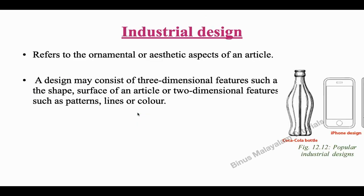The next one is industrial design. If you have a trademark, you can use a brand new design. Industrial design refers to the ornamental or aesthetic aspect of an article. For example, the Coca-Cola bottle design or the Apple iPhone design. A design may consist of three-dimensional features such as shape and surface, or two-dimensional features such as patterns, lines, and colors.